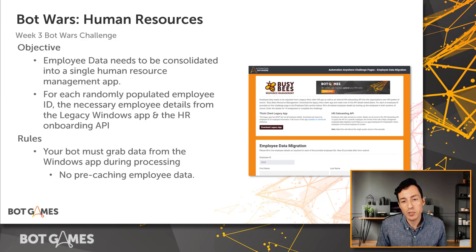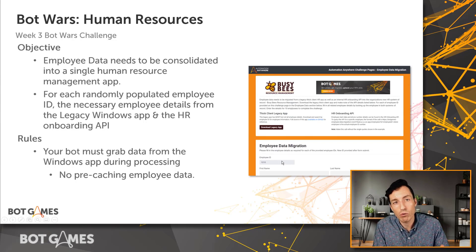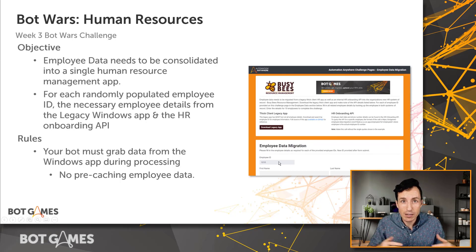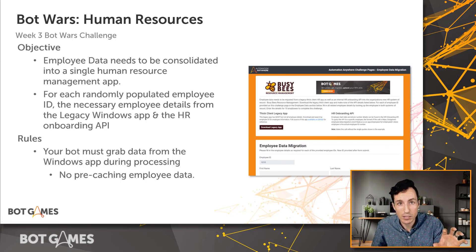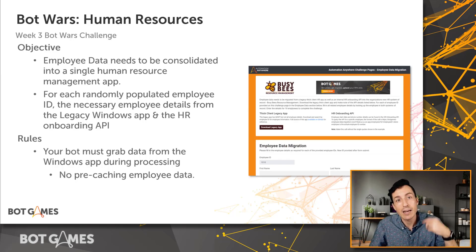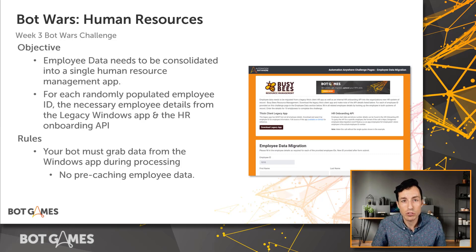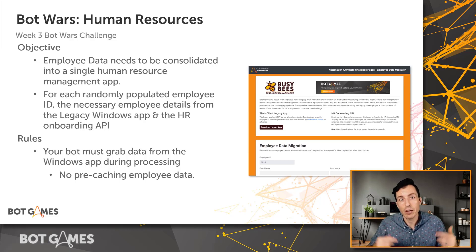Here's how it works: the page will load and randomly give you an employee ID. You'll need to fill out all the details for that employee — some details come from the Windows thick client app, some come from the API. You'll hit submit and another randomized employee ID will be provided. You're going to do that 10 times in total, so you'll keep submitting, keep looking up, and keep entering all the data for those employees.